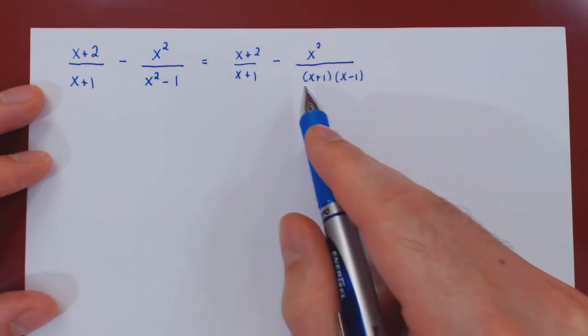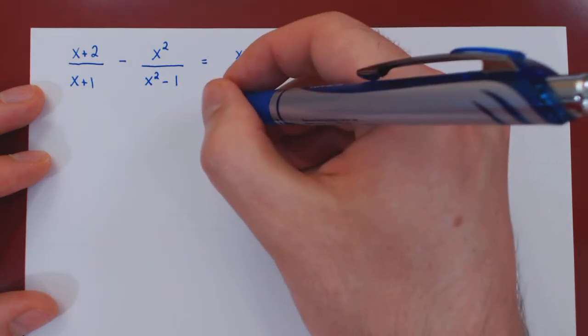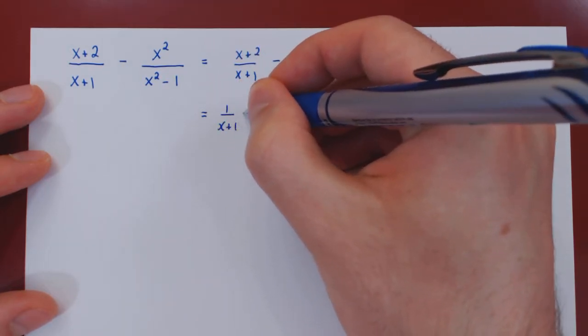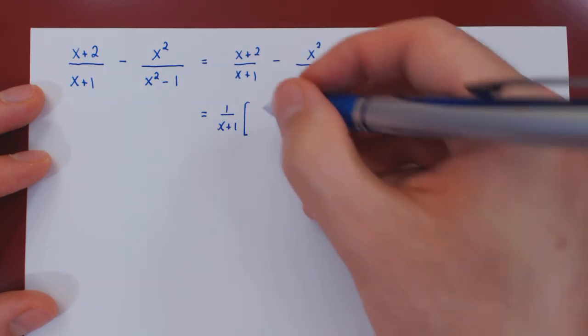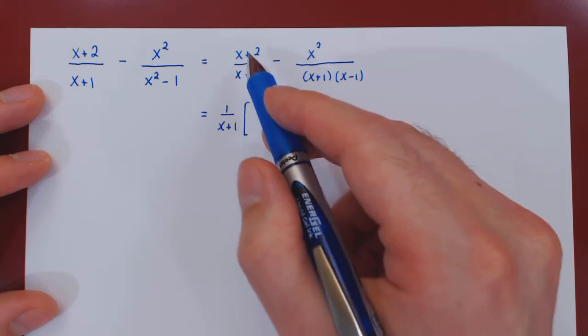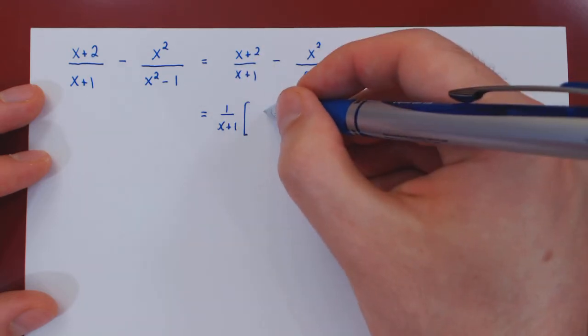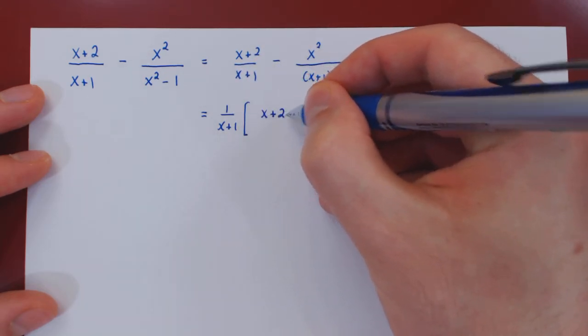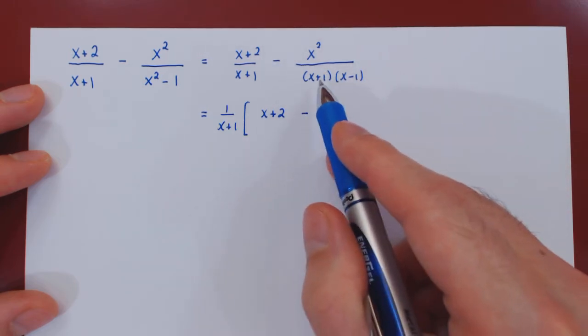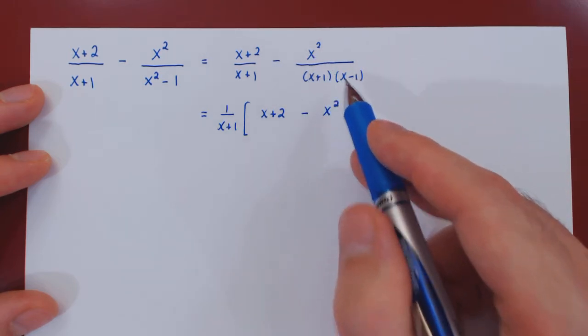And now we're going to factor out the x plus 1 term from both denominators. So we have 1 over x plus 1 up front times everything else. So if we factor the x plus 1 on the bottom in the first case, we're left with a single numerator of x plus 2 minus x squared, and factoring the x plus 1, we're left with x squared over x minus 1.